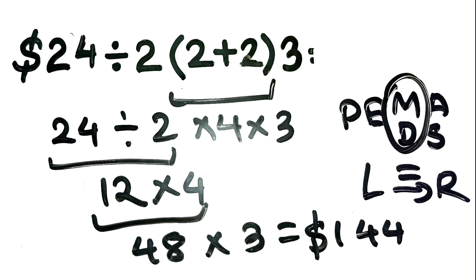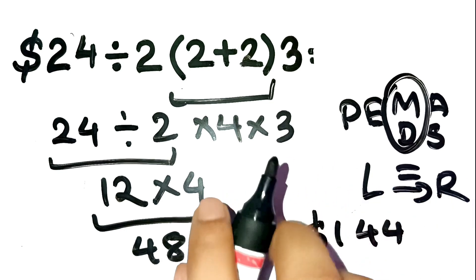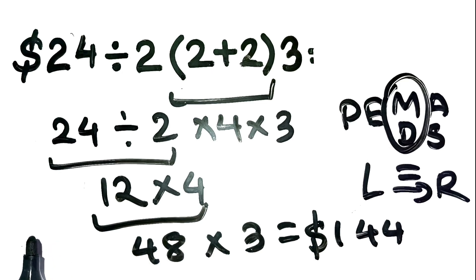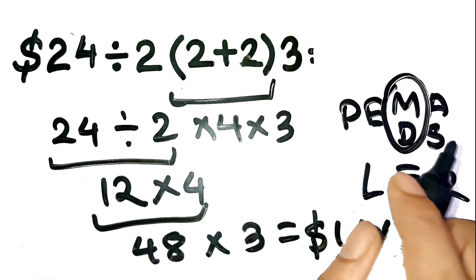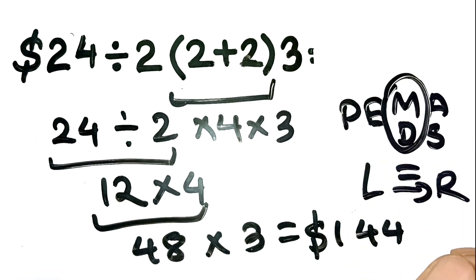This is why clear math logic matters, especially when you're dealing with finance, investments, or interest calculations. One wrong order and your whole portfolio math collapses. Think of it like compound returns. The order of growth steps matters. If you mix them up, you might think you made 1%, but you actually grew your investment by over 100 times. Just like this equation, order decides the outcome.